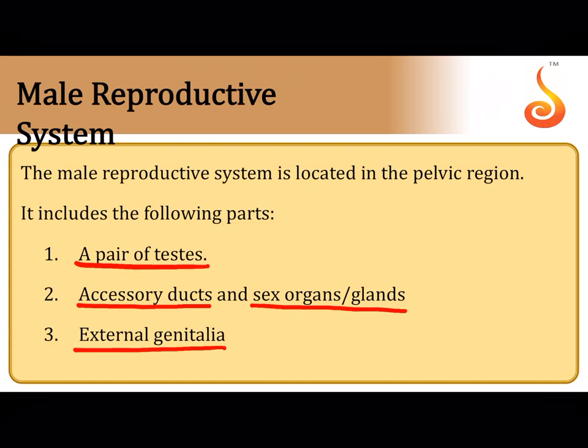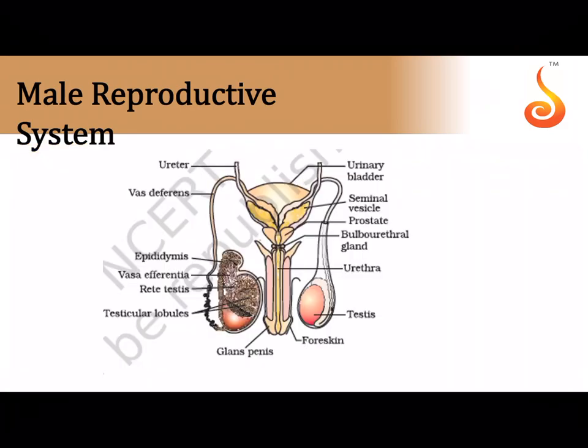The glands pour out secretions which help in nourishment, maturation, and transfer of sperm from the male reproductive tract into the female tract during copulation. The external genitalia helps in copulation.